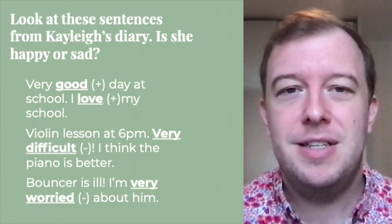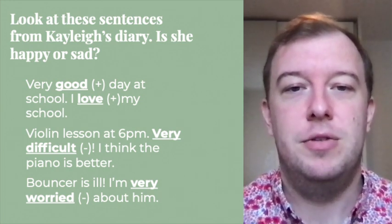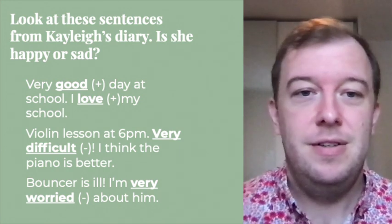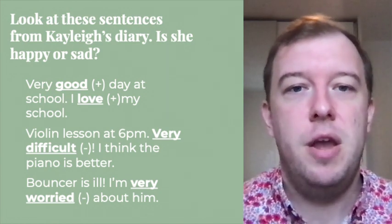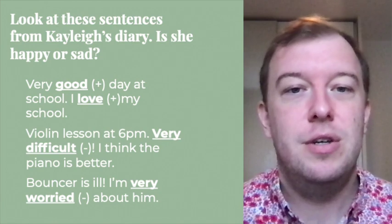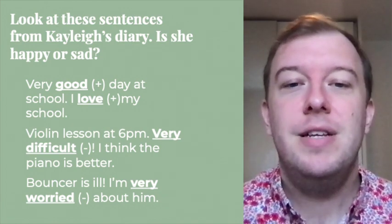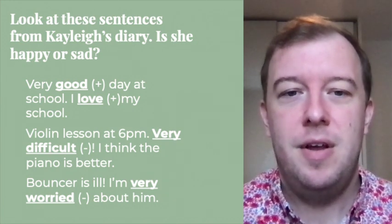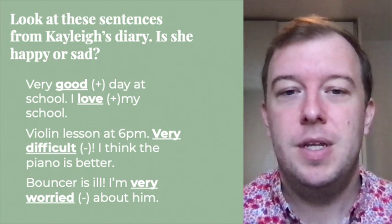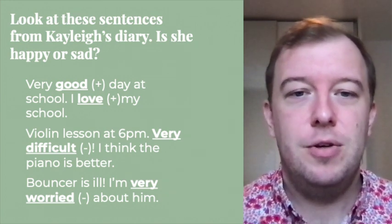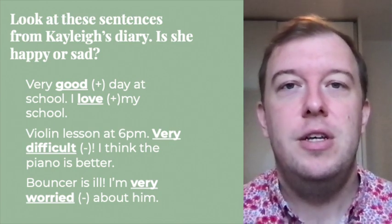Okay, let's take a look. So — very good day at school. I love my school. 'Good' is definitely a positive word. 'Love' — another positive word. So it's pretty clear she is happy. Number two — violin lesson at 6 p.m. Very difficult. I think the piano is better. So 'very difficult' — that is negative. So she is sad.